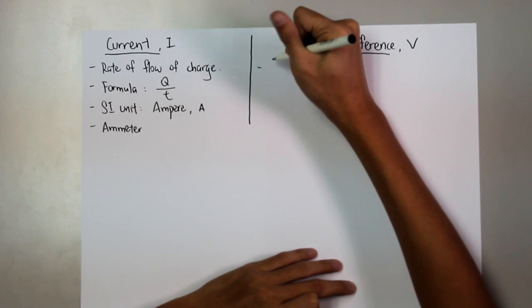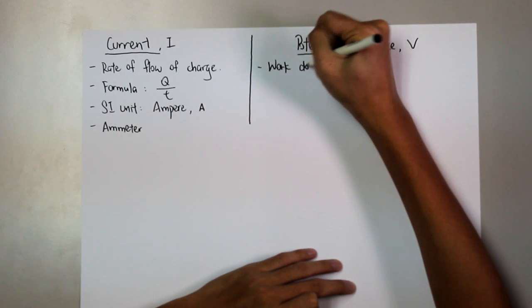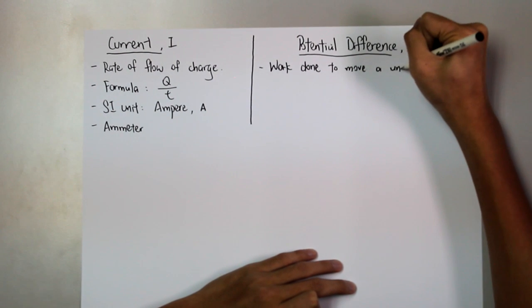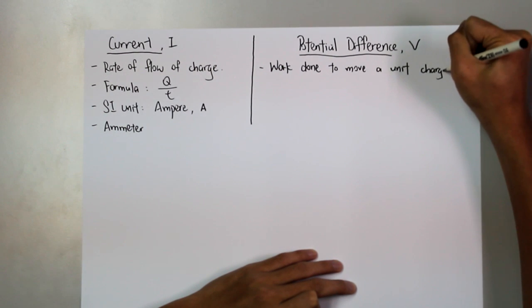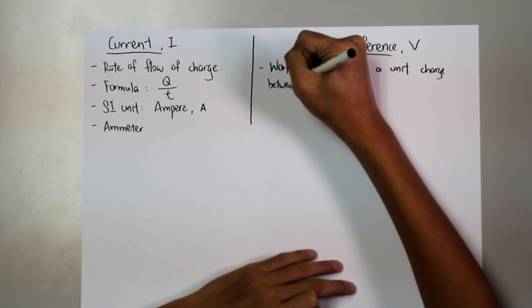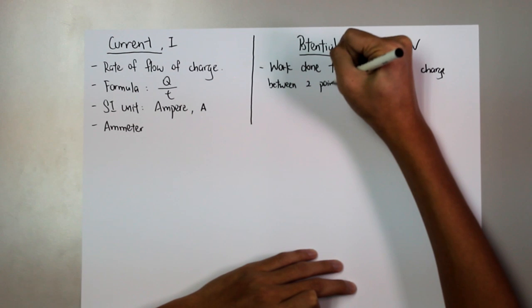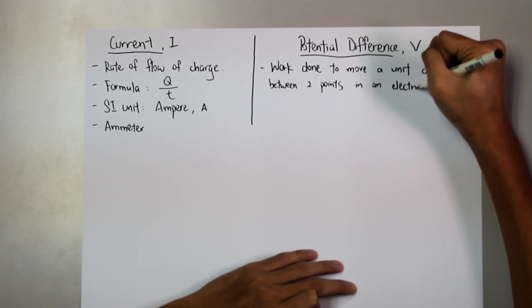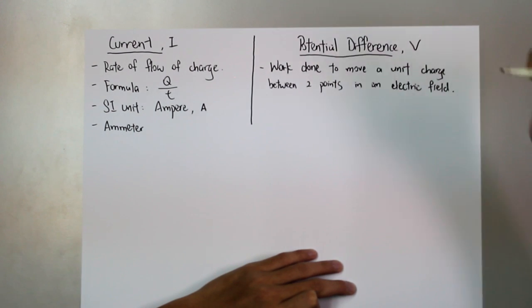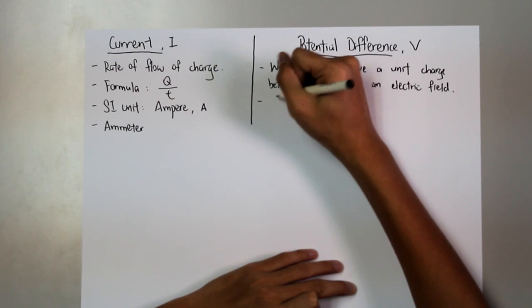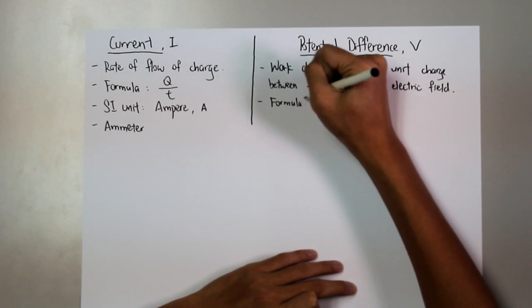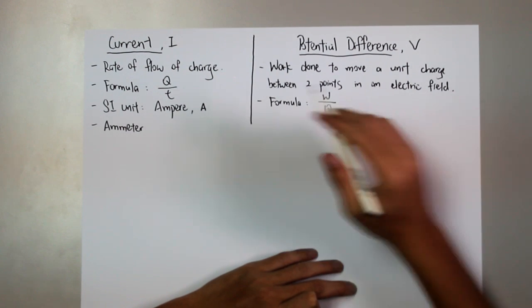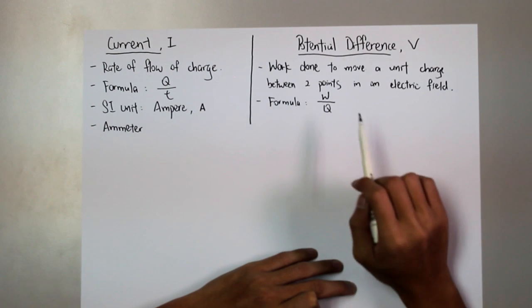The definition for potential difference is the work done to move a unit charge between two points in an electric field. As you can see from the definition, the formula should be given as the work done, W, over charge, Q. That's why you say work done to move a unit charge between two points in an electric field.